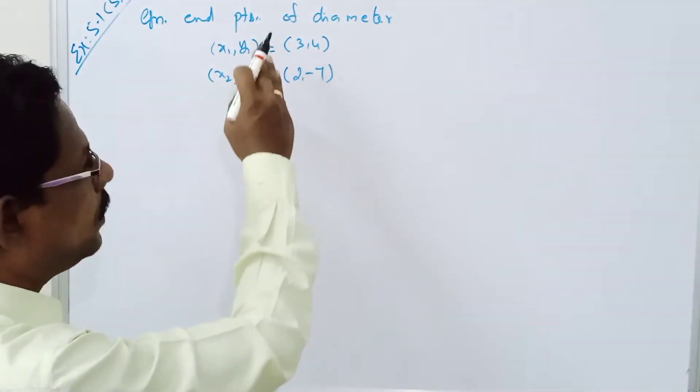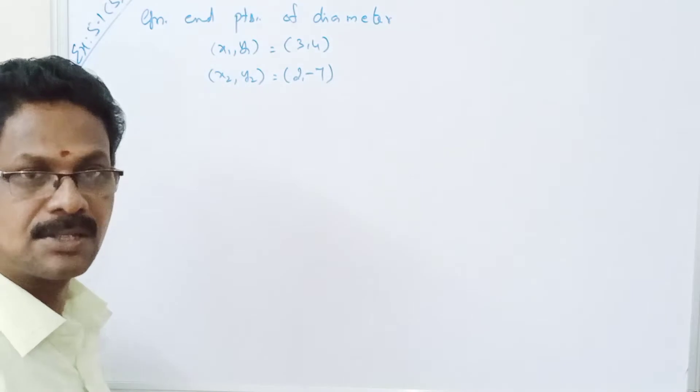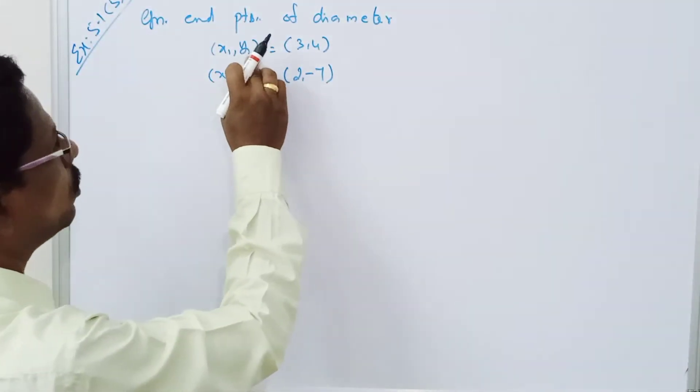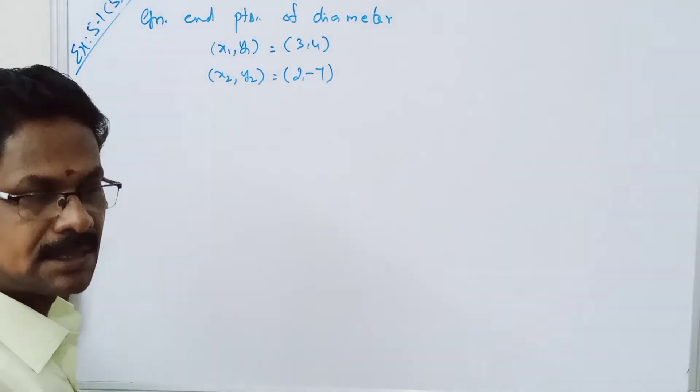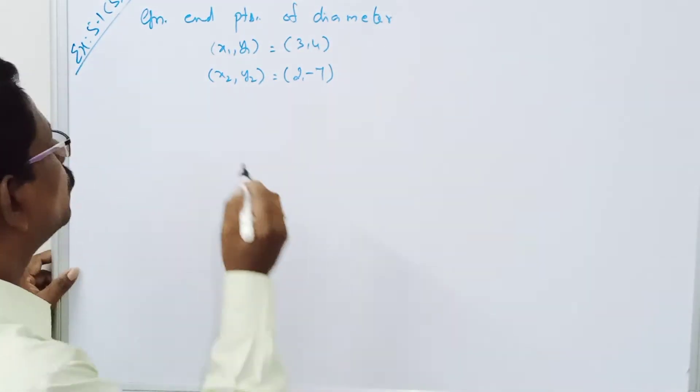Welcome. Given two points of the diameter, take x1, y1 equal to 3, 4 and x2, y2 equal to 2, minus 7. Therefore, what is the equation of the circle?